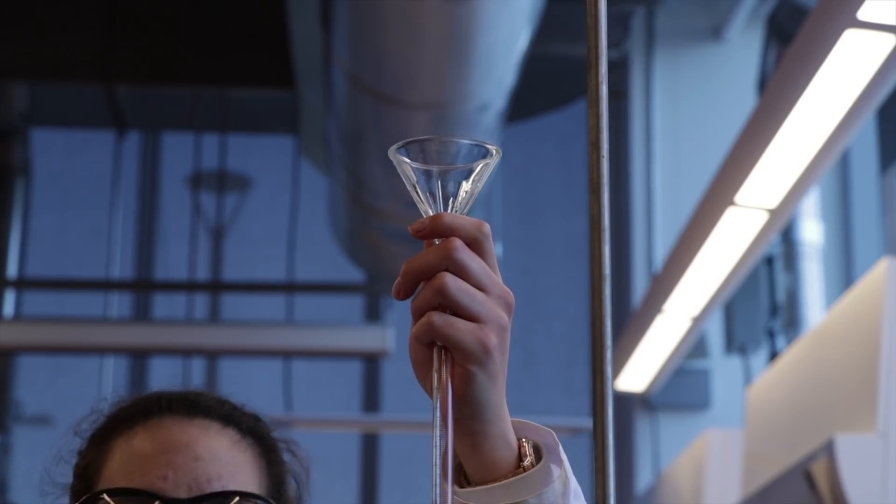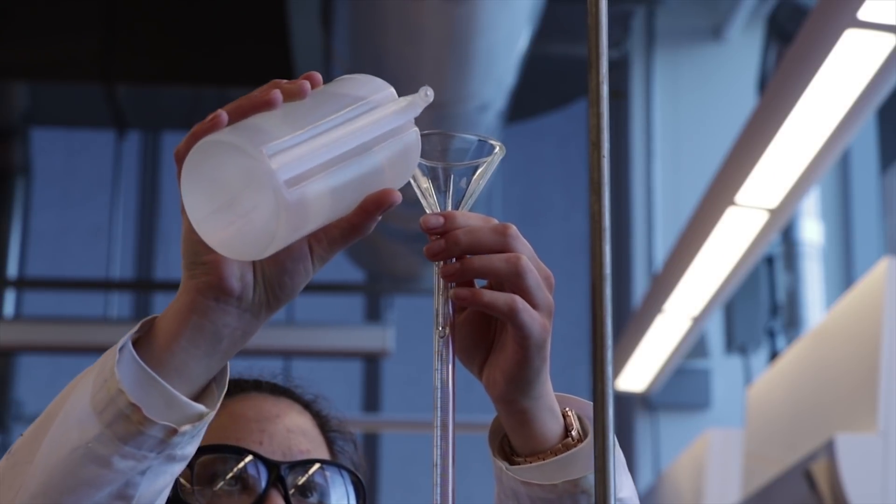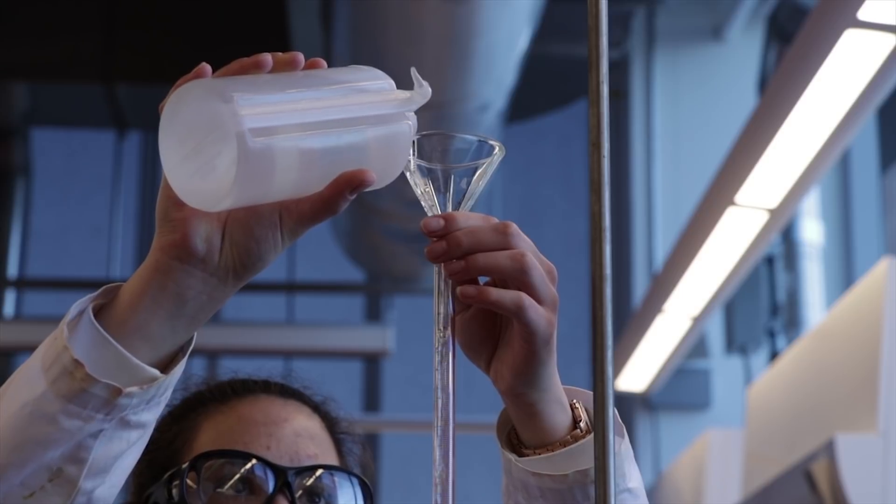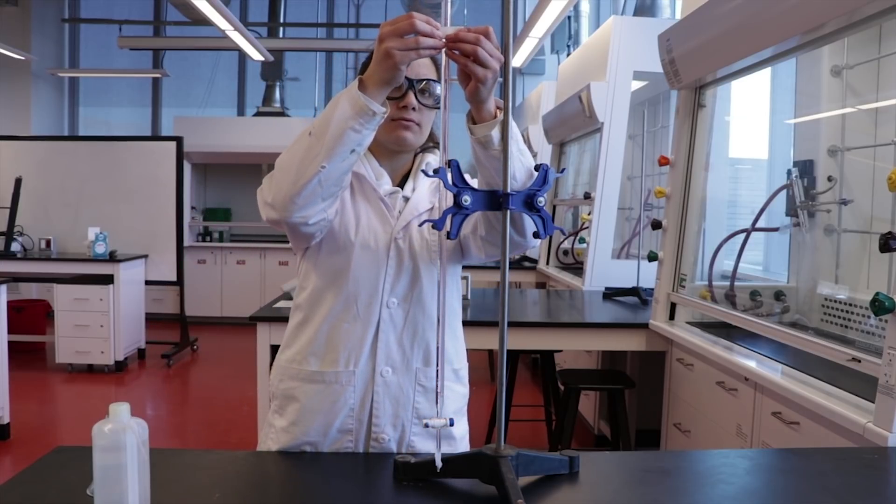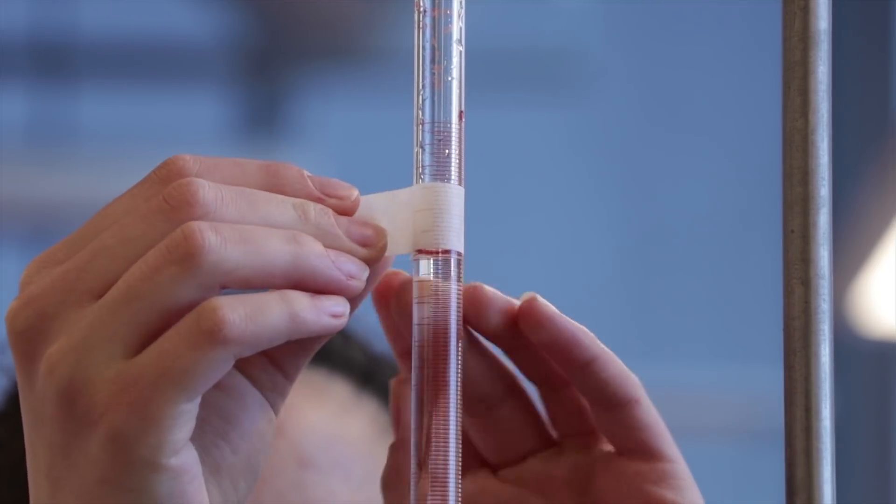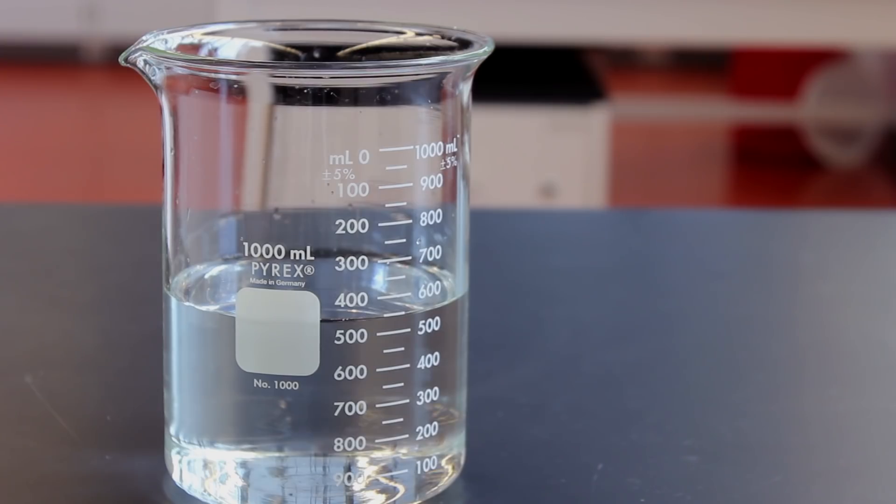Then fill the burette with distilled water using a funnel. Mark the liquid level with a piece of tape. Obtain a 1 liter beaker and fill it about halfway with distilled water.